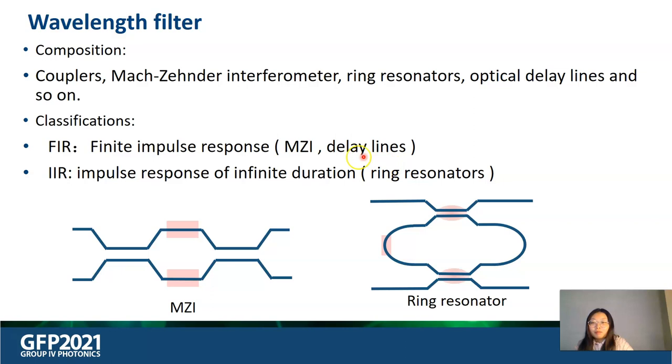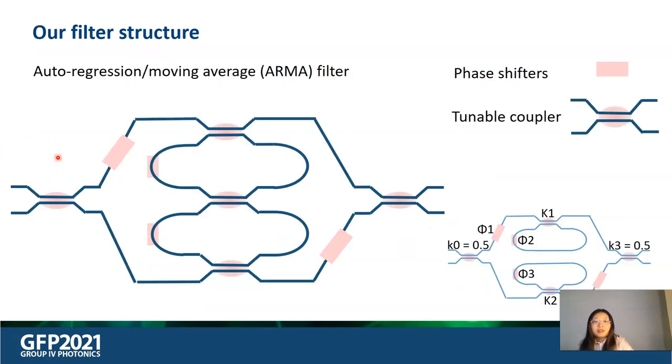And the IIR filter is composed by feedback delay lines, feedback loops, such as ring resonators, and it's also called auto regression filters. We hereby present a circuit which incorporates both MZI and double ring resonators, which has features from both AR filter and FIR filter. Such filters, which combine characteristics from both filters, are so-called auto regression moving average filter.